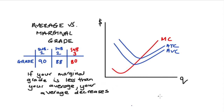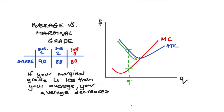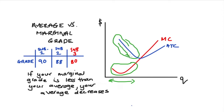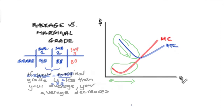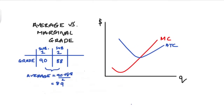Bringing it back to our cost curves, this is exactly what happens with our marginal and average cost curves. Let's consider the average total cost. If we evaluate any point on our quantity axis where the average total cost curve is decreasing, you'll see that at that point the marginal cost curve is below the average total cost curve. This generalizes for all quantities where our average total cost is decreasing: our average is decreasing when our marginal is below our average.